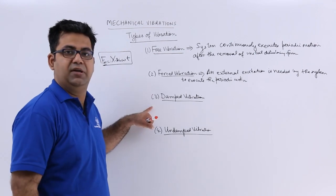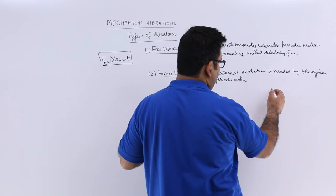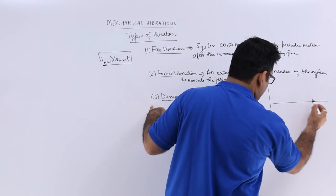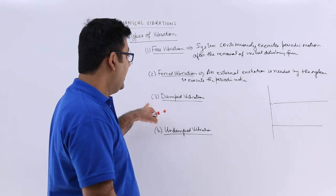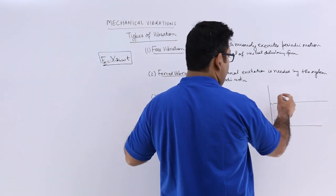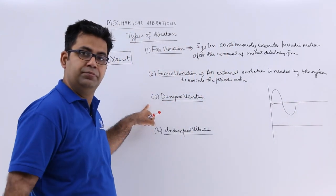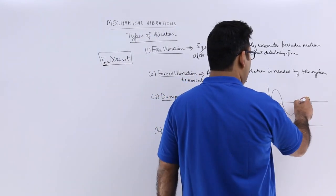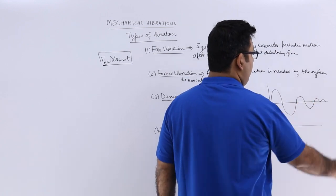Next is the damped vibration. Damped means that let me show you a diagram. We will draw two diagrams. For damped, let us say you produce an initial periodic motion, and after that your periodic motion in amplitude keeps on decreasing.